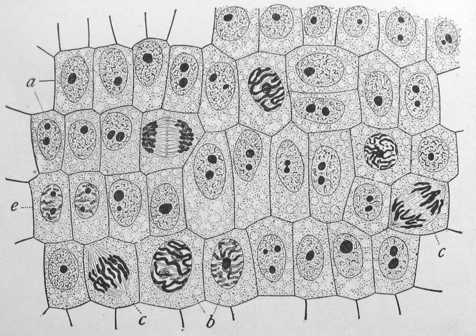Most plant and animal cells are visible only under a microscope, with dimensions between 1 and 100 micrometers. Cells were discovered by Robert Hooke in 1665, who named them for their resemblance to cells inhabited by Christian monks in a monastery. Cell theory, first developed in 1839 by Matthias Jakob Schleiden and Theodor Schwann, states that all organisms are composed of one or more cells, that cells are the fundamental unit of structure and function in all living organisms, and that all cells come from pre-existing cells. Cells emerged on Earth at least 3.5 billion years ago.